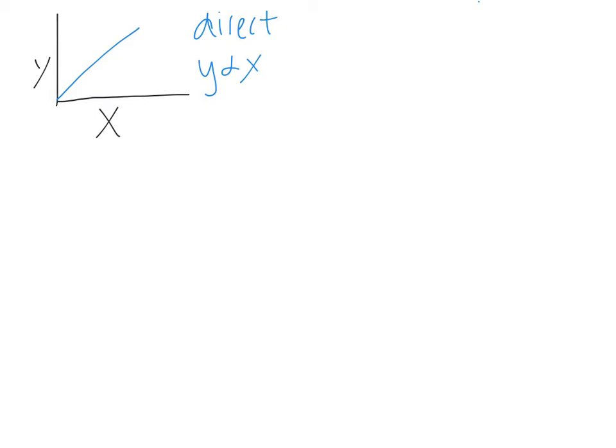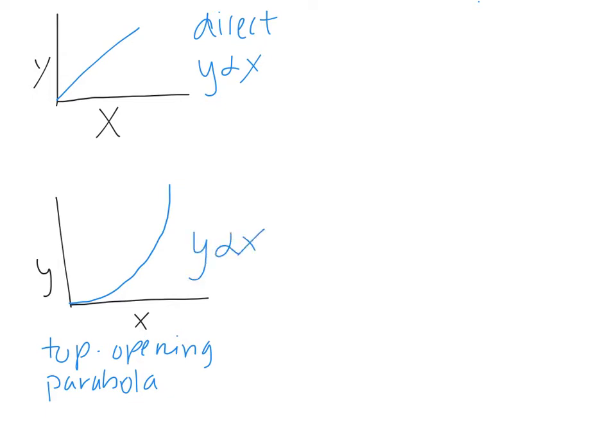The second type of graph that we may see was just on the previous slide. And it's going to look like a top opening parabola. And a top opening parabola, or any parabola for that matter, is a square relationship. Top opening parabola is where y is proportional to x squared.